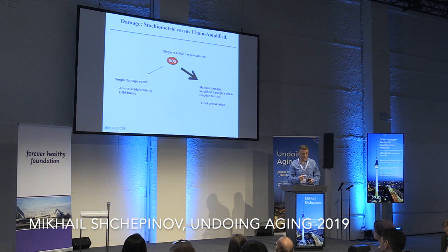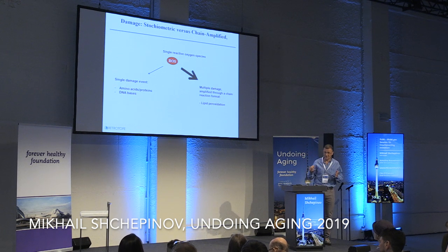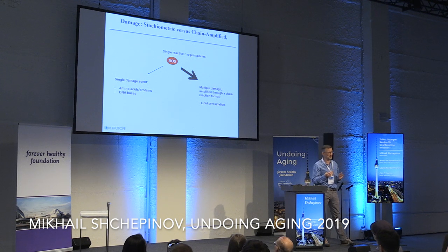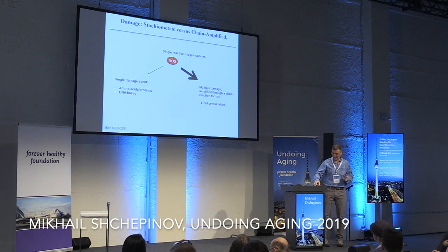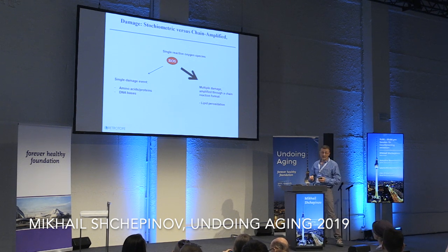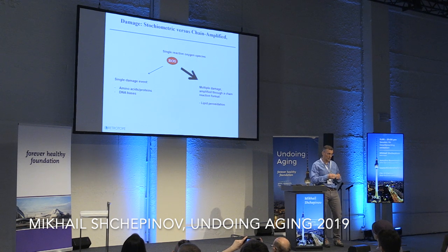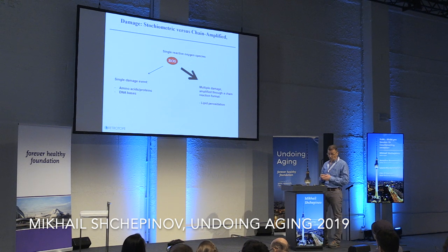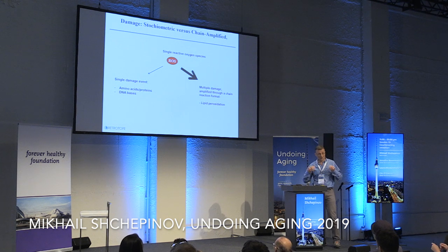There are two major types of oxidative stress. If you imagine a reactive oxygen species hitting an amino acid in a protein or a DNA base, that would result in one unit of damage — stoichiometric. However, there is an exception: a class of biomolecule called polyunsaturated lipids undergoes multiple damage when hit with just one reactive oxygen species. This is because the damage happens through a chain reaction format — you only need one initiating event to damage a great many lipids.